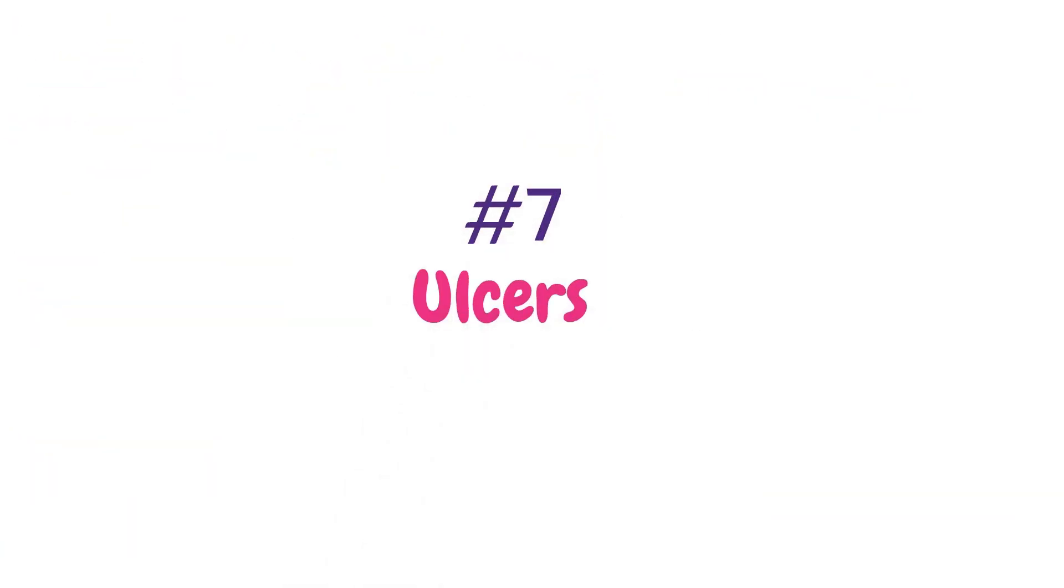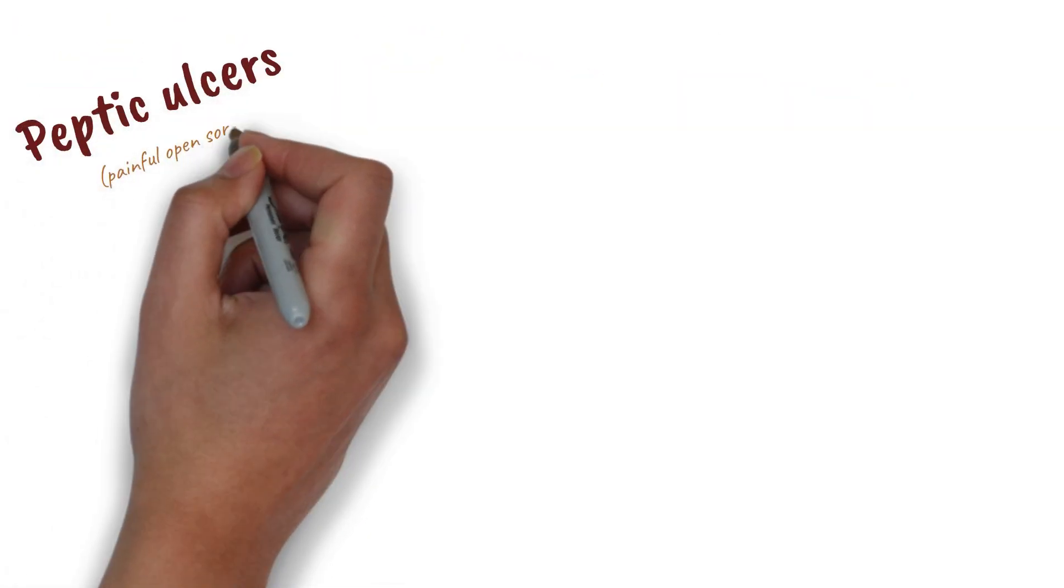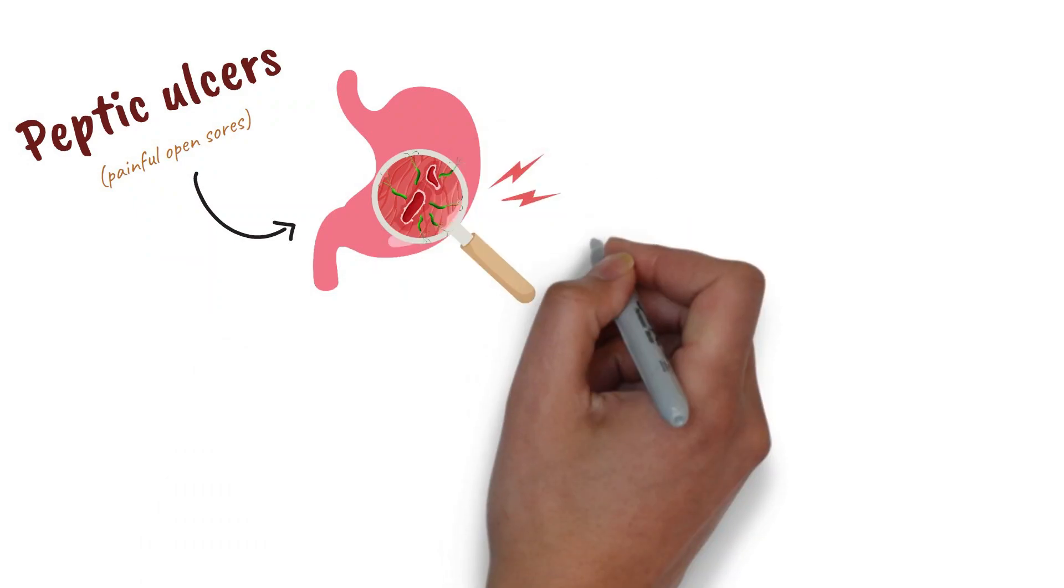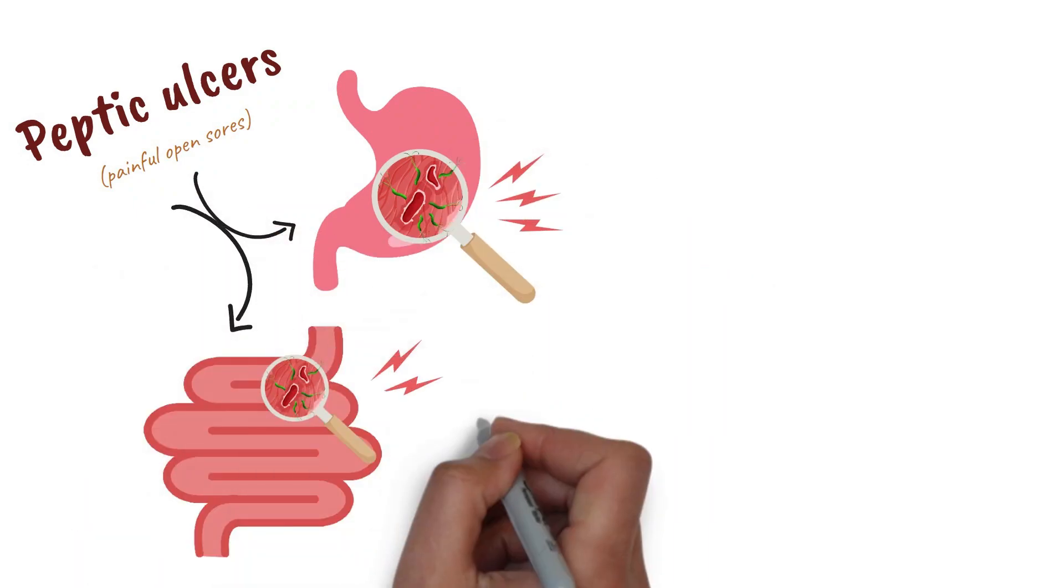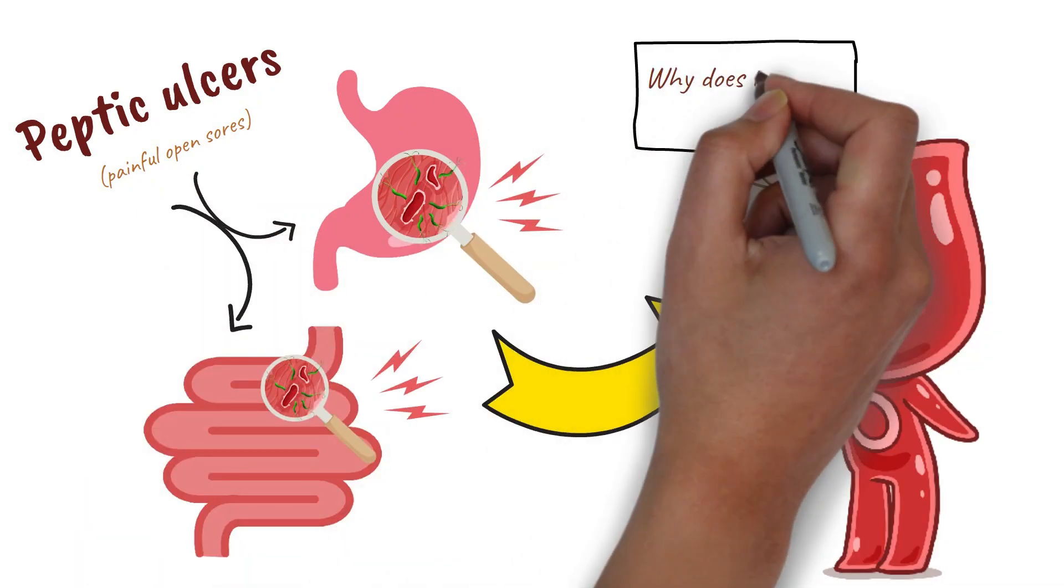Number seven, ulcers. Peptic ulcers, painful open sores that crop up in the lining of your stomach or upper intestine, seem to happen more often with blood type O.